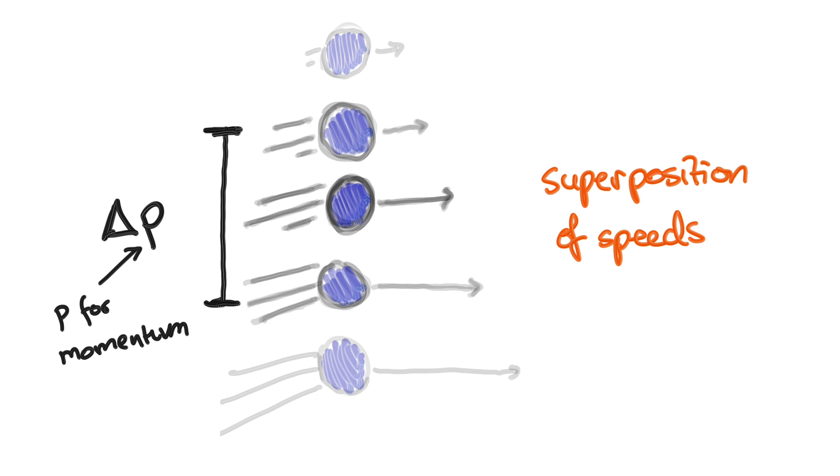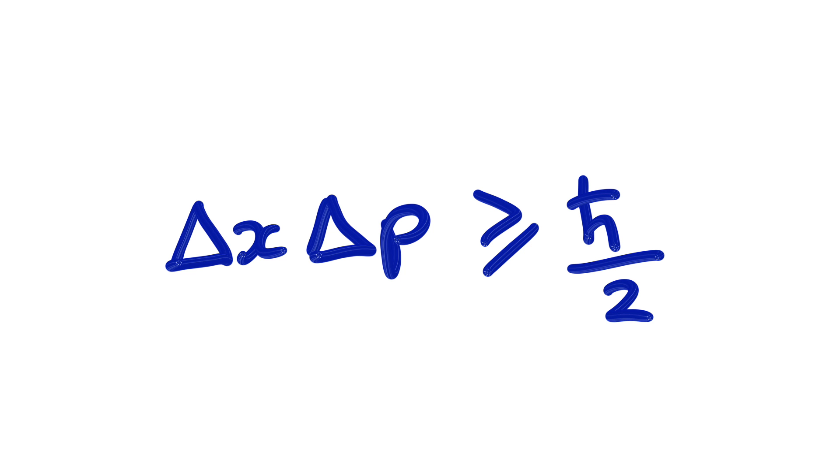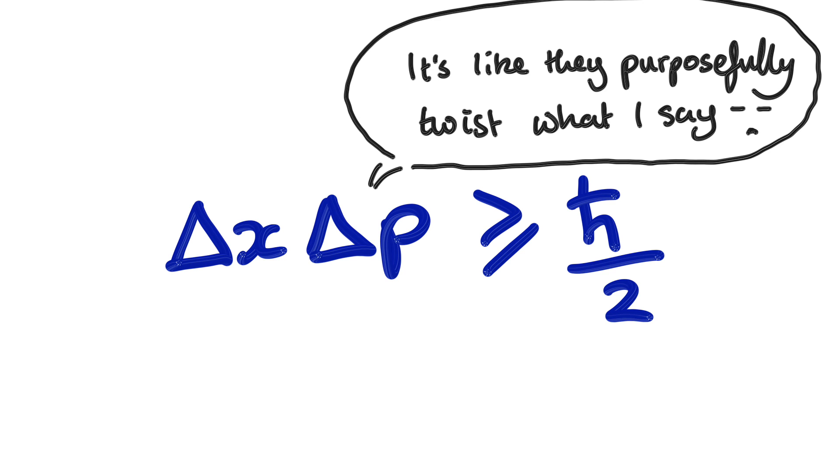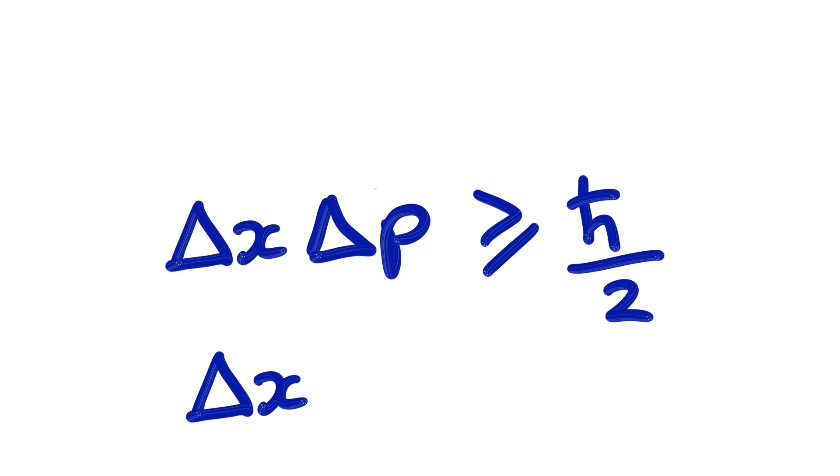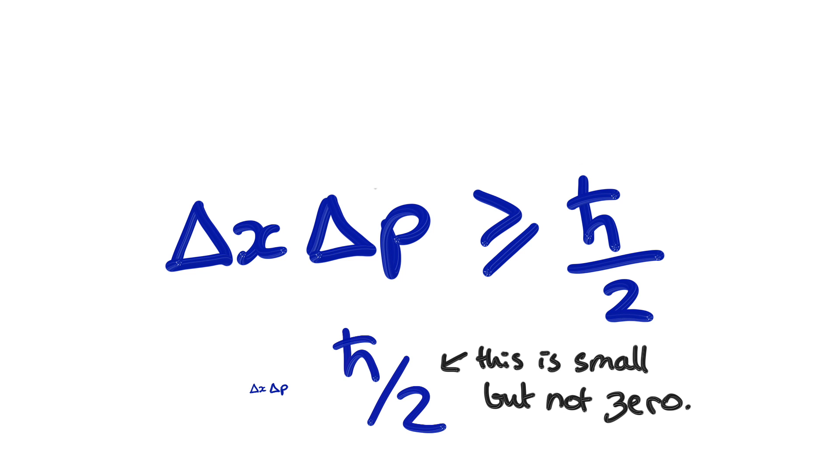Now we have the stage set for understanding that famous misused equation. What it says is, in quantum mechanics, delta x and delta p can't both be as small as you want. See, if delta x was really, really, really, really small, but so was delta p, their product would be very small. And that's no good. It has to be bigger than this number.